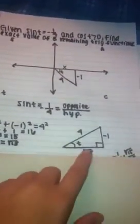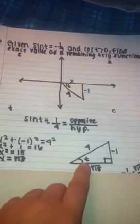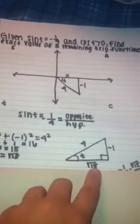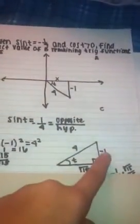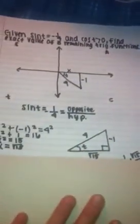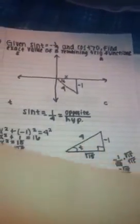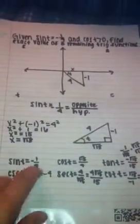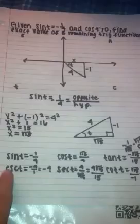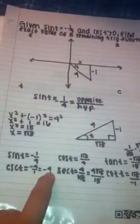Now we can complete the triangle with theta at t, square root of 15 for x, negative 1, and 4. We already know sine of t is negative 1 over 4, so the cosecant of t equals negative 4 over 1, which equals negative 4, since cosecant is just the reciprocal of sine.